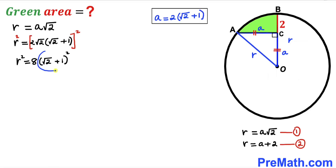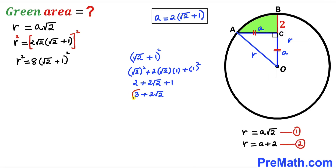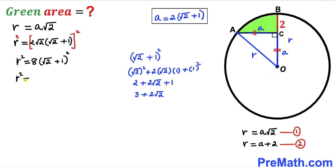Now let's expand (√2 + 1)². Using the identity (a + b)² = a² + 2ab + b², this becomes (√2)² + 2·√2·1 + 1² = 2 + 2√2 + 1 = 3 + 2√2. Therefore r² = 8(3 + 2√2).